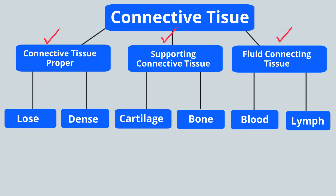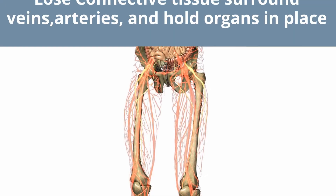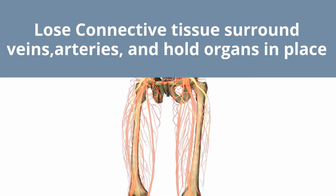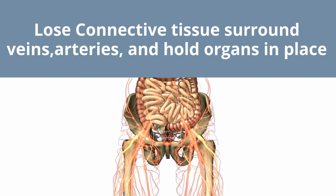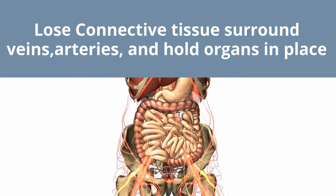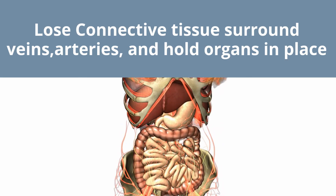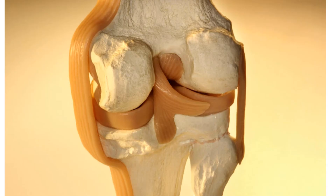Connective tissue proper has two kinds: loose connective tissue and dense connective tissue. Loose connective tissue functions to support and hold tissues and organs in place. They are found around organs and also form the fat layer between the skin and muscle. Dense connective tissue includes ligaments and tendons — ligaments attach bone to bone and tendons attach muscle to bone.